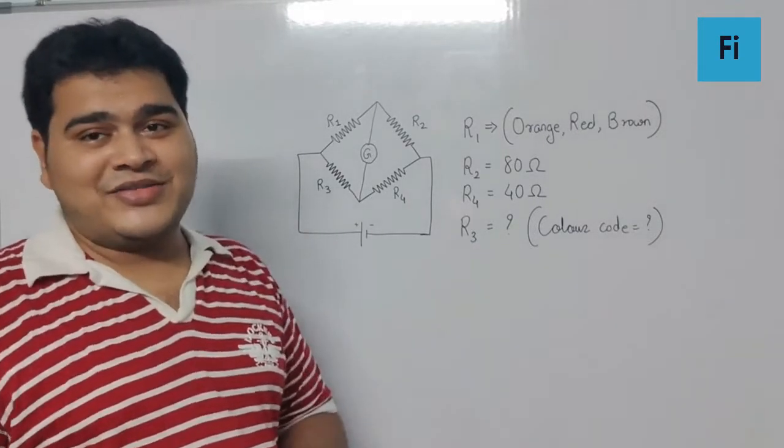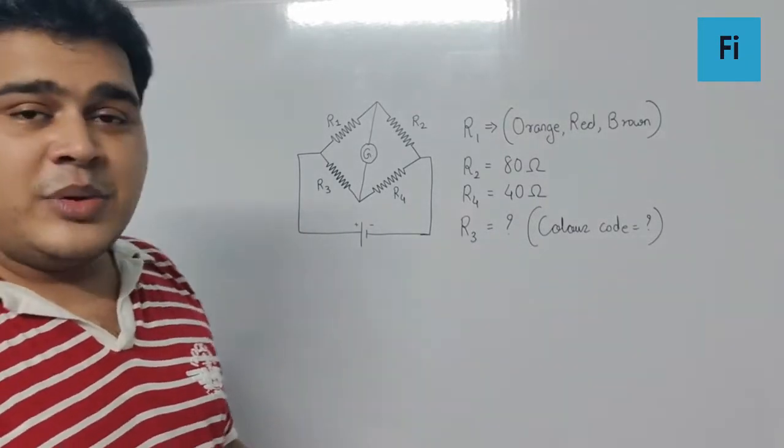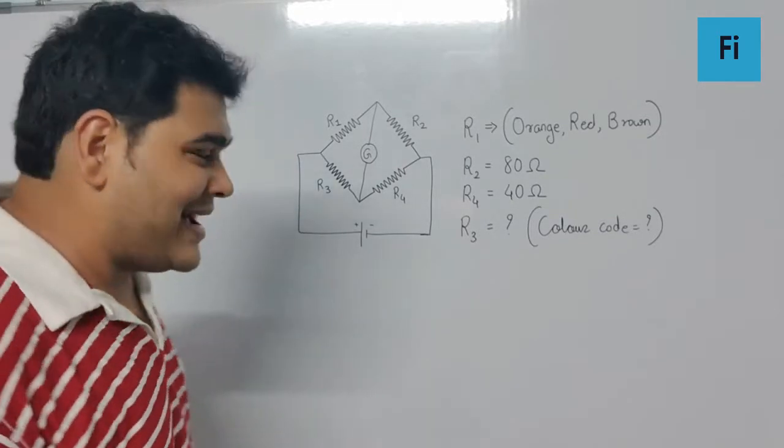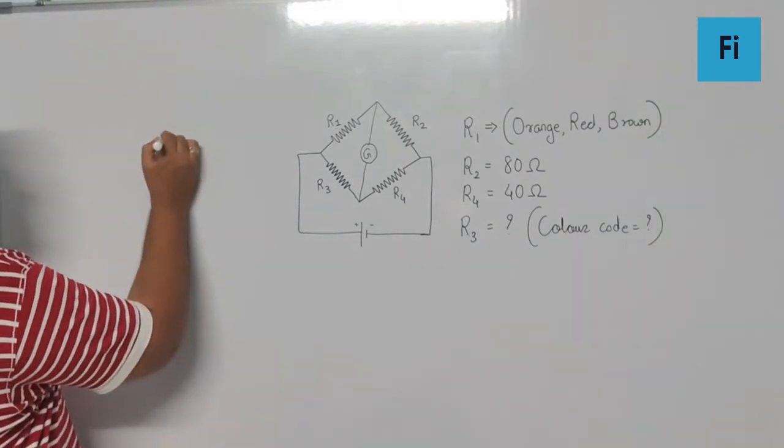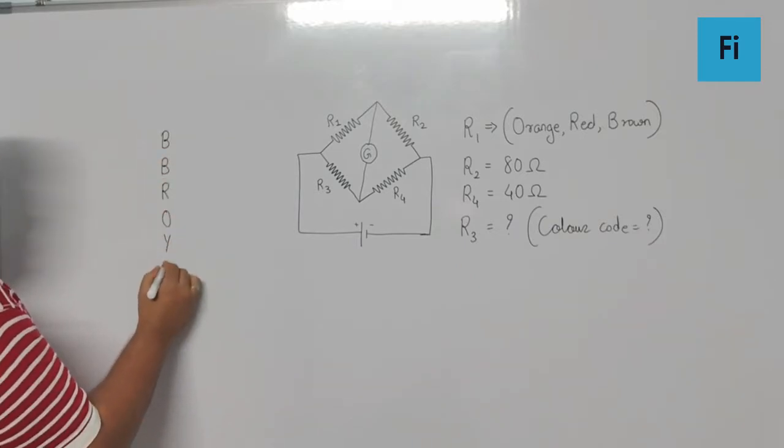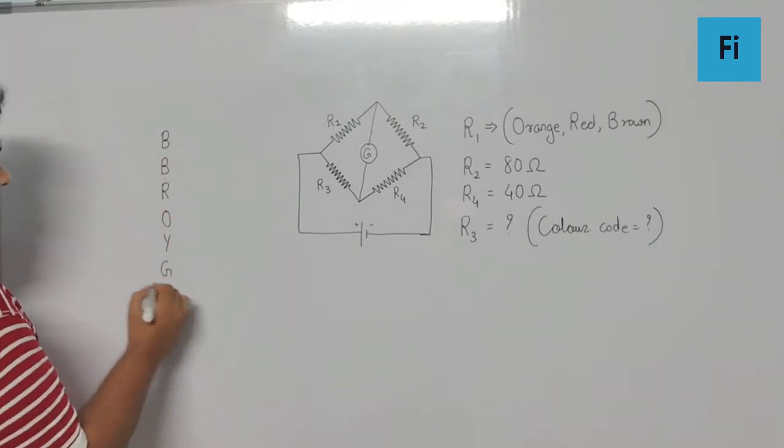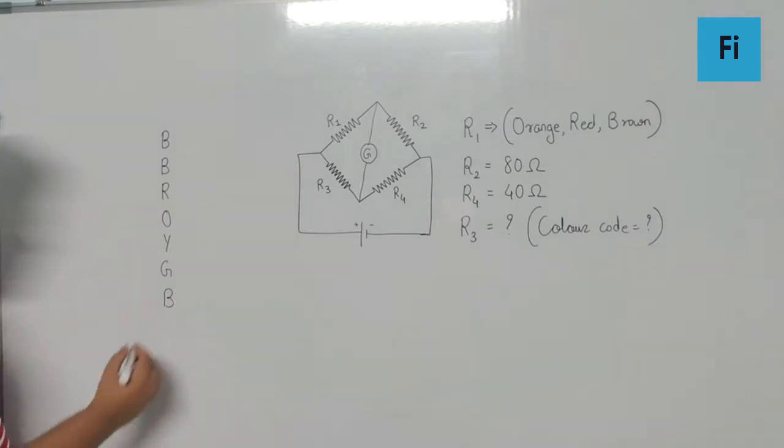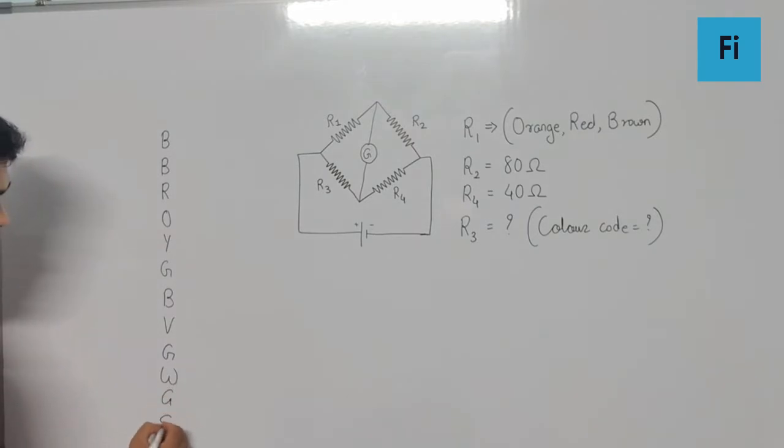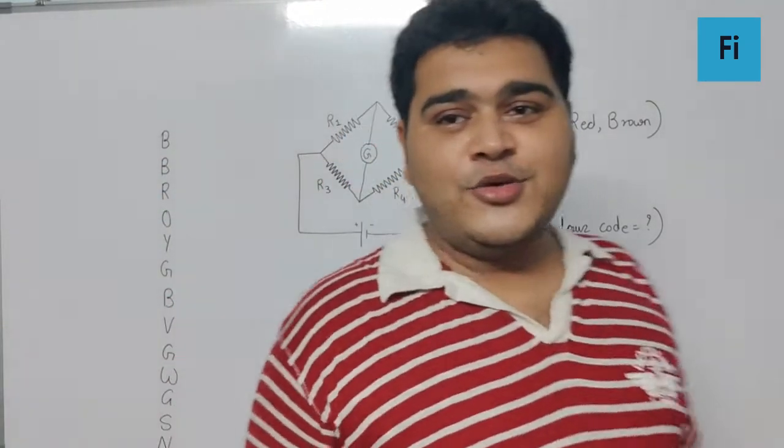First of all, we need to remember the table. The shortcut is: B.B. Roy of Great Britain have a very good wife wearing gold, silver necklace. Now this color code you need to remember.